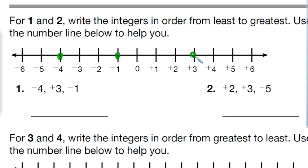Now, in order to put those from least to greatest, we always work from left to right. Anytime you're looking at numbers, the number that's the farthest to the left on your number line will be the least.